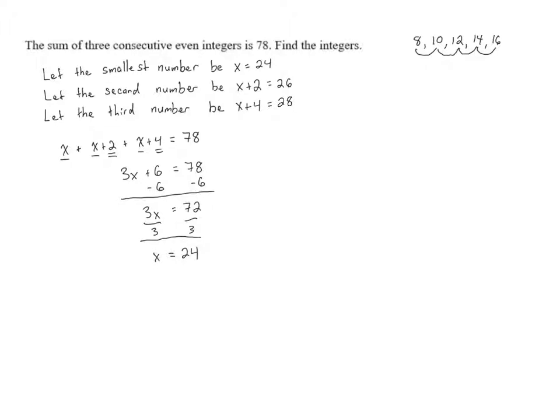We can see that these are, in fact, consecutive even integers: 24, 26, 28. So we were asked to find the integers. Our conclusion will be the integers are 24, 26, and 28.